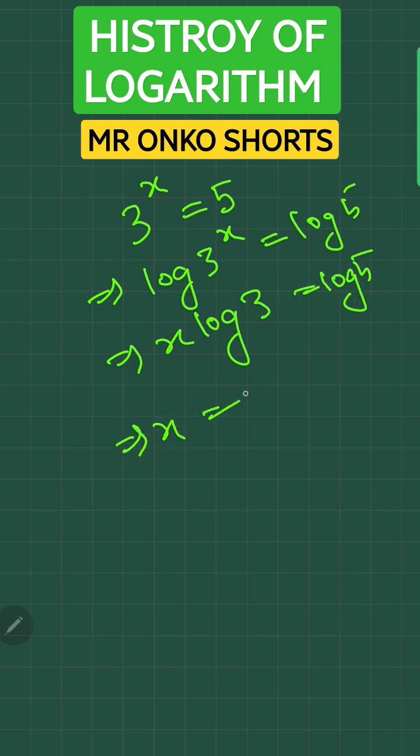Then x equals log 5 divided by log 3. That is log of 5 to the base 3. Now x equals this.